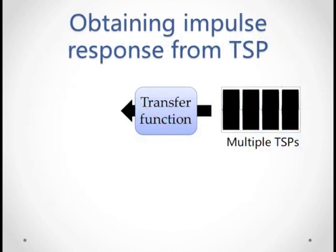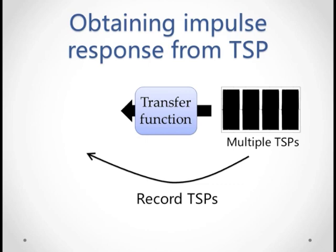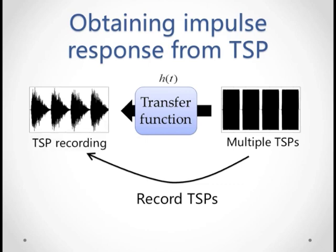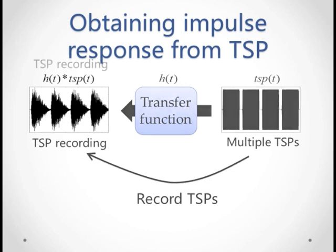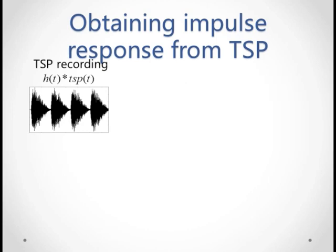Now let's see how to obtain an impulse response from a TSP. The standard method is to play multiple TSPs and record them. Remember, the recording can be considered a convolution of the transfer function and the TSP. So how do we convert these TSP recordings into an impulse response?